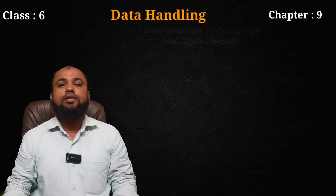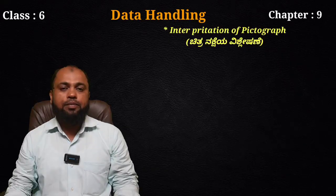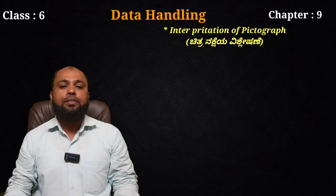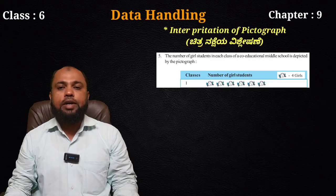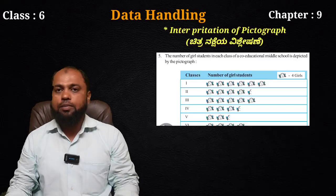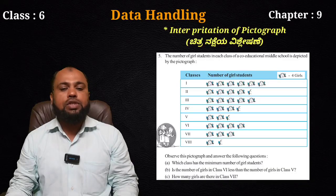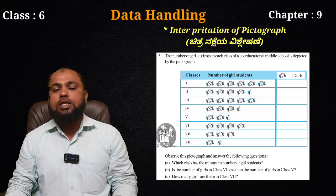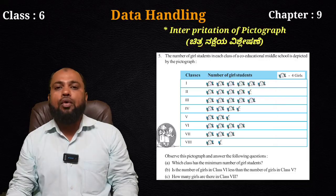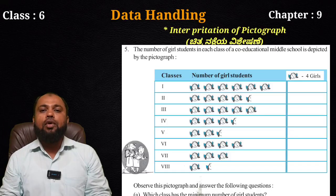Let's see one example of a pictograph. In this example, the number of girl students in each class of a co-educational middle school is represented in a tabular column. There are three columns: one is class, second is number of students shown with pictures, and third is total numbers. Each girl student picture represents four girls — a single picture represents four girls.